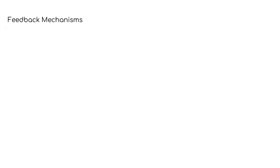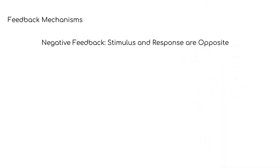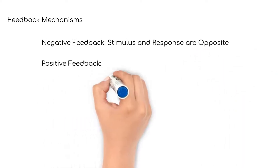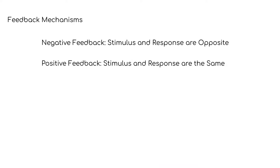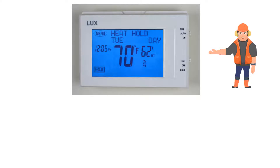Homeostasis relies on what are called feedback mechanisms. Your body has thousands of feedback systems in place that work to regulate many substances. There are two types of feedback. Negative feedback is when the response is opposite to the stimulus. Positive feedback is where the response is the same as the stimulus. It's helpful to think of feedback in this stimulus-response way.